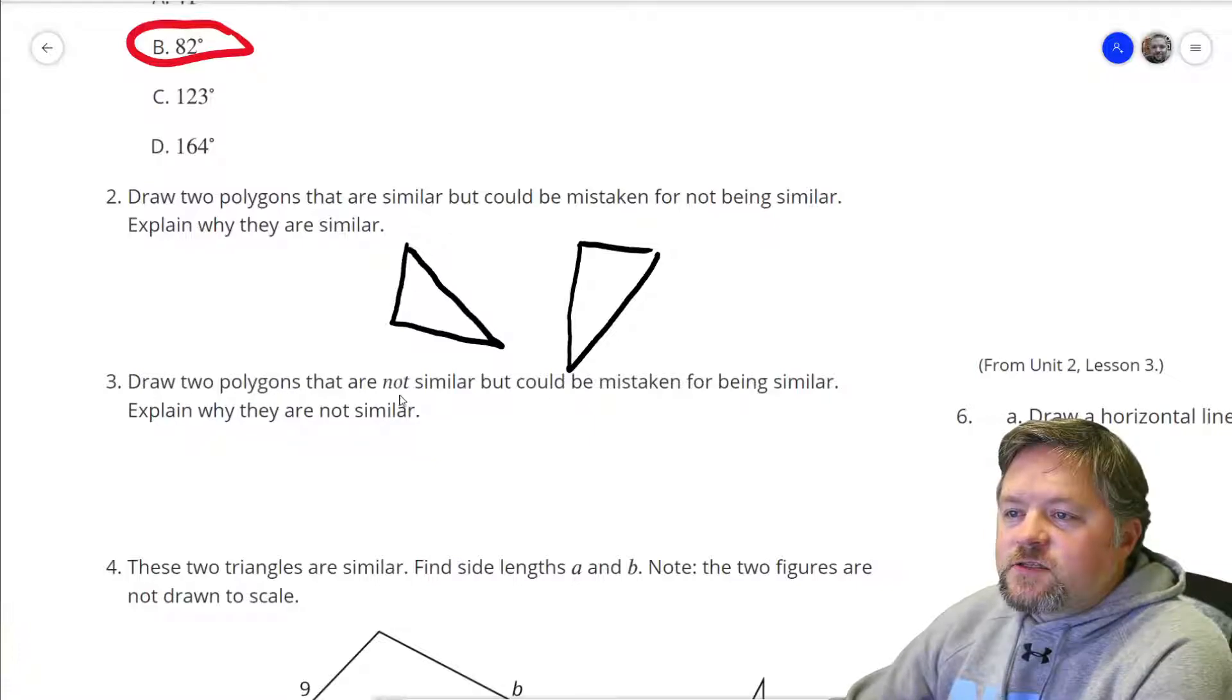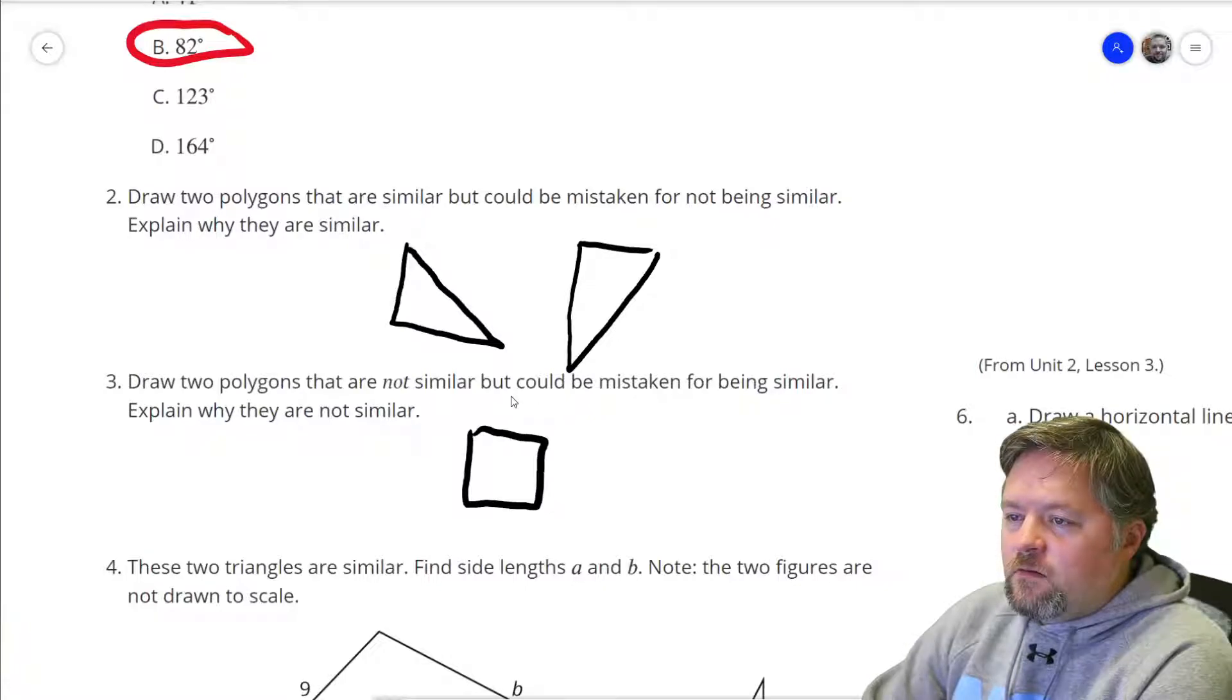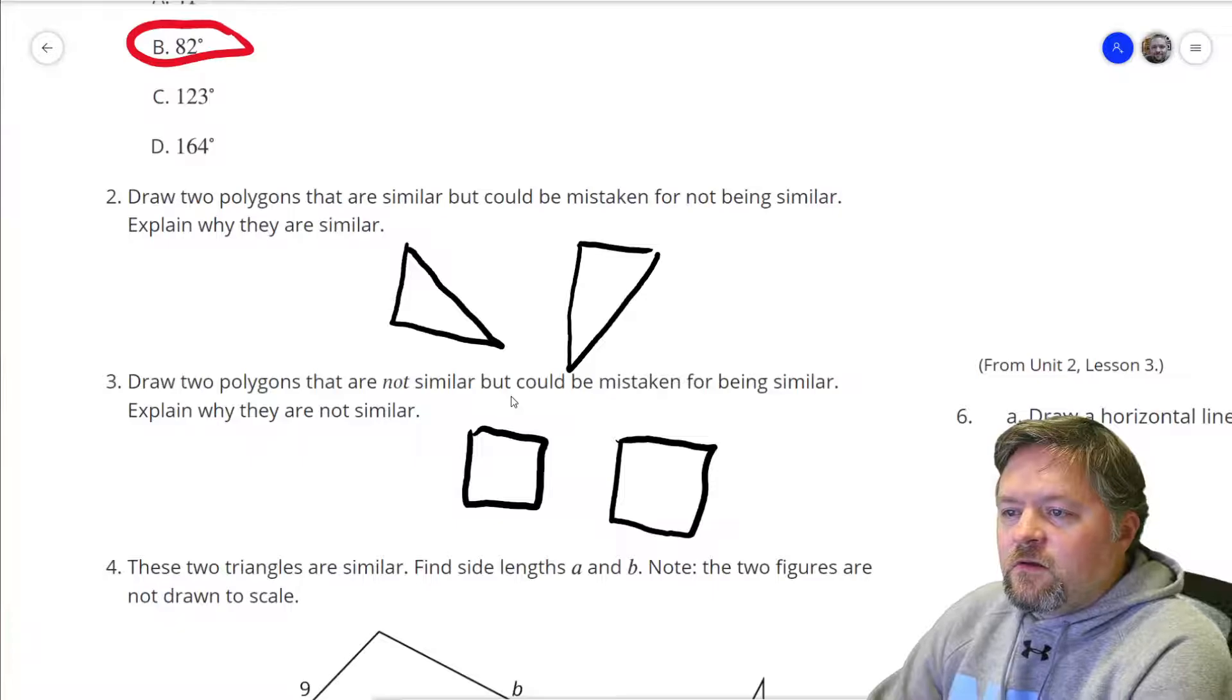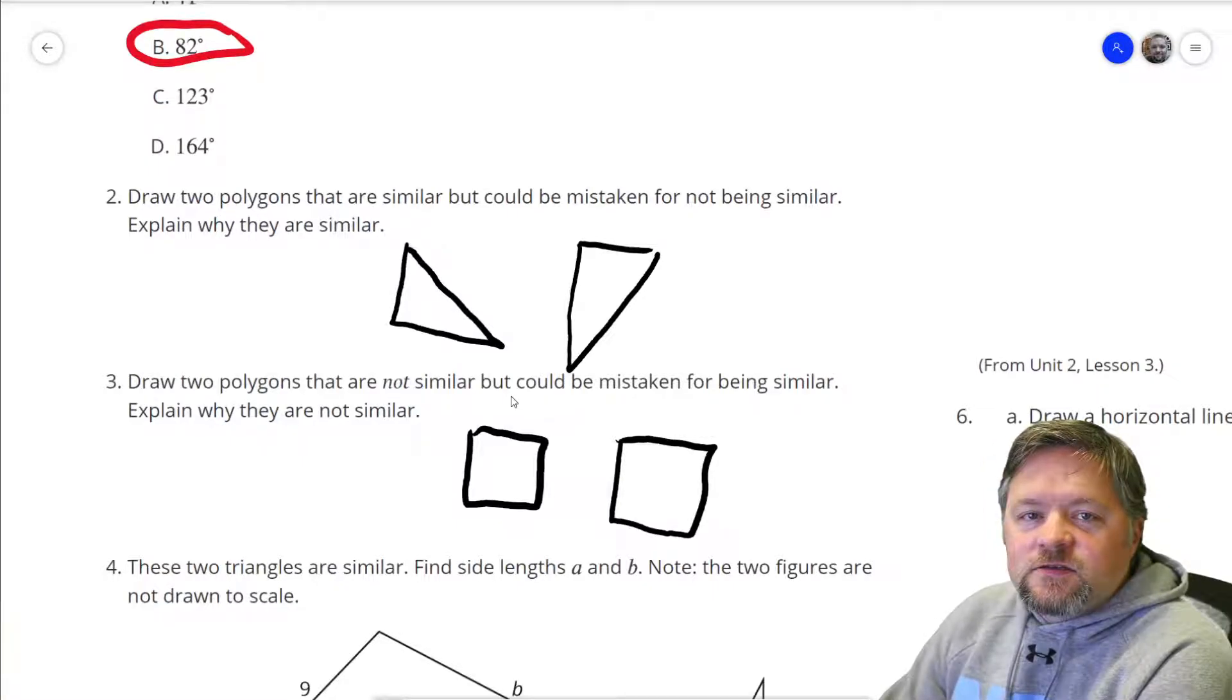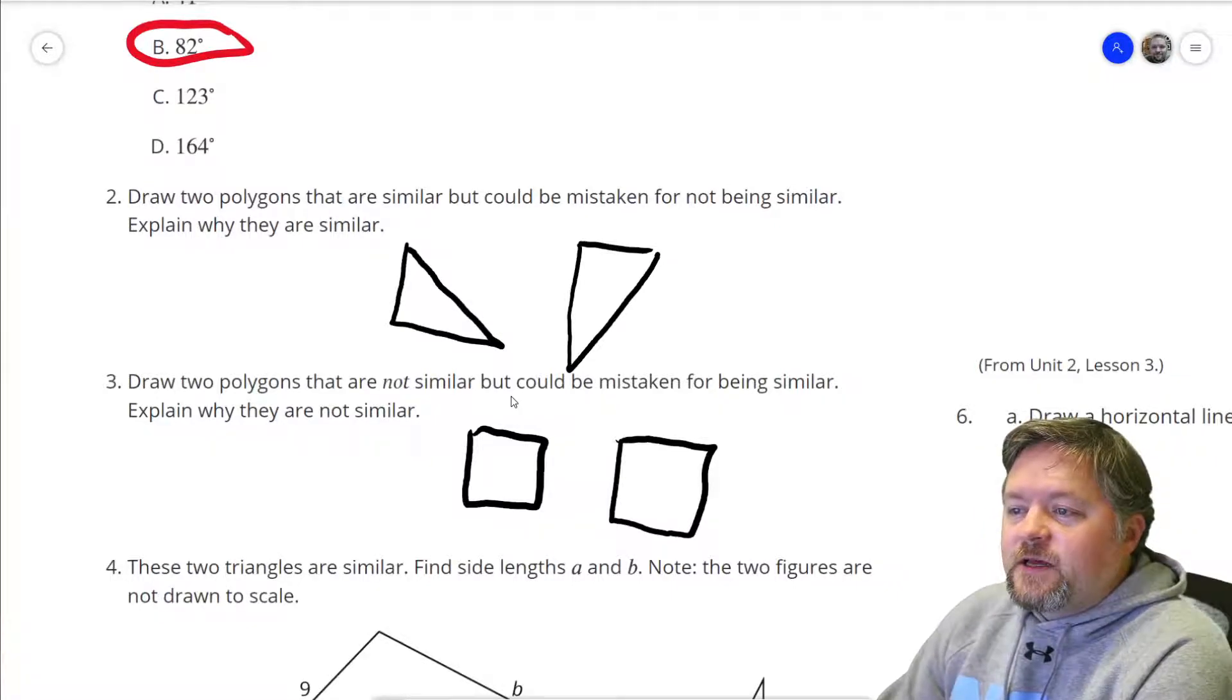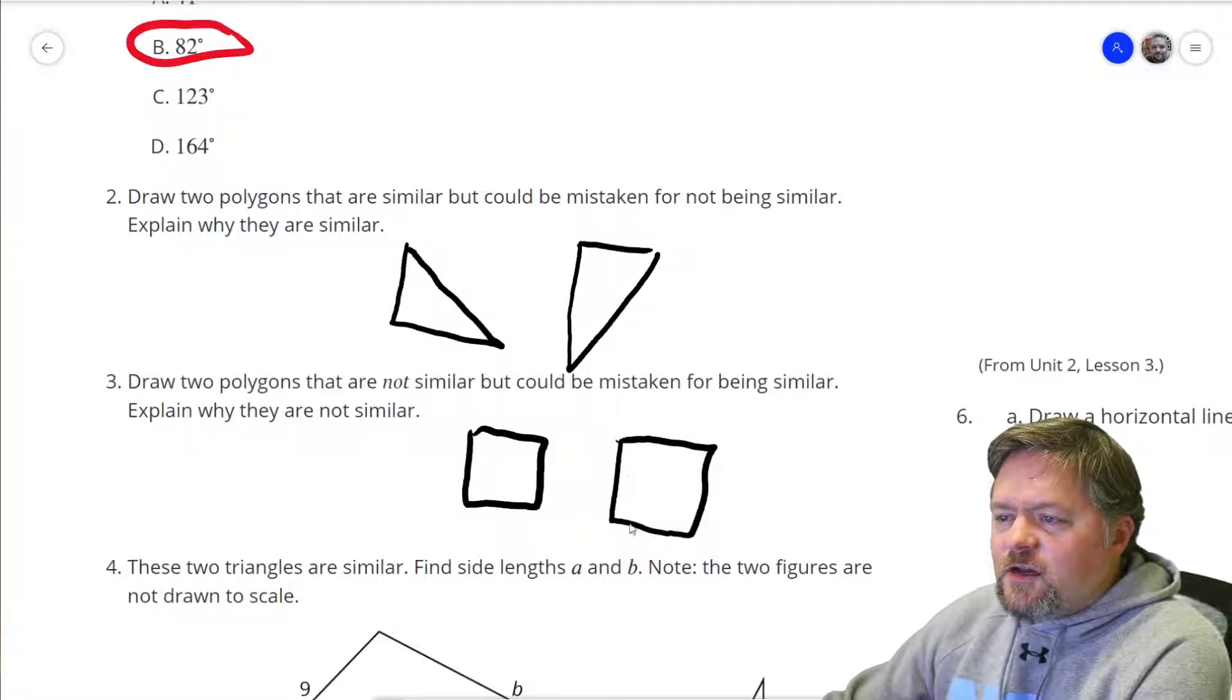Draw two polygons that are not similar, but could be mistaken for being similar. What if one is a square and all the angles are 90 and the other one has two 89 degree angles and two 91 degree angles, then they would be really close to the same thing, but not similar because the angles are really close, but not quite the same. All 90s, 2 89s, 2 91s.